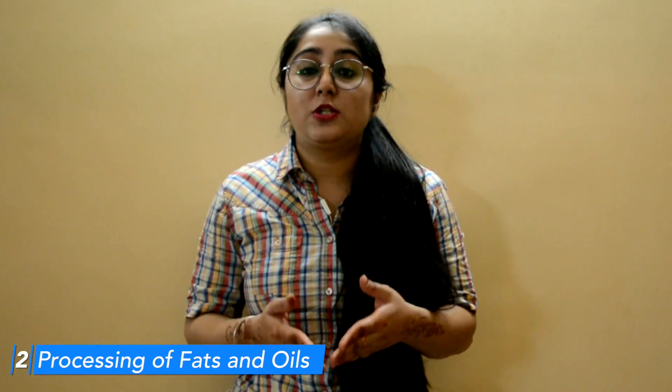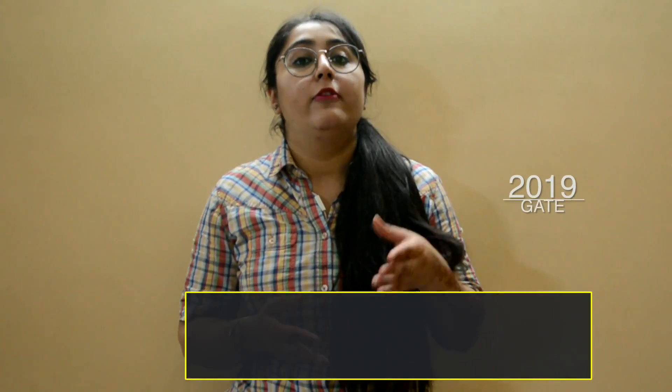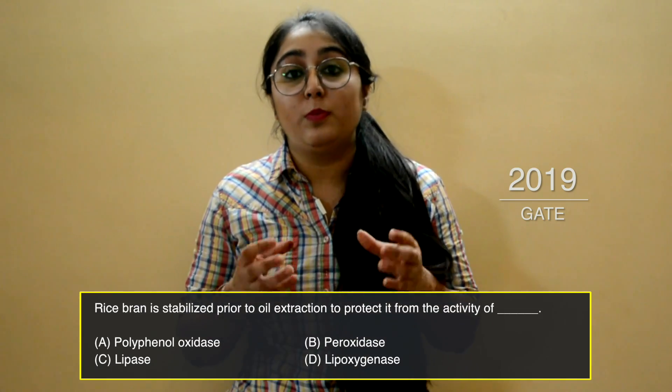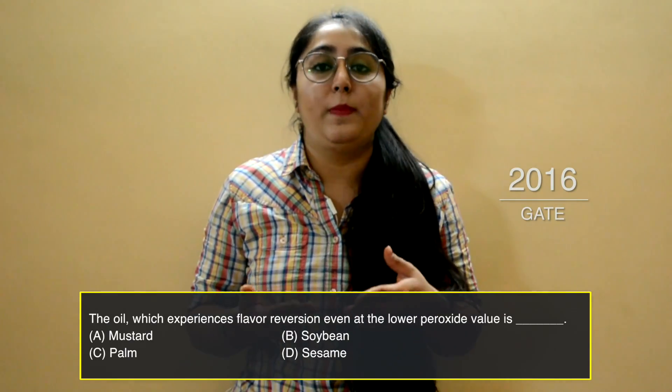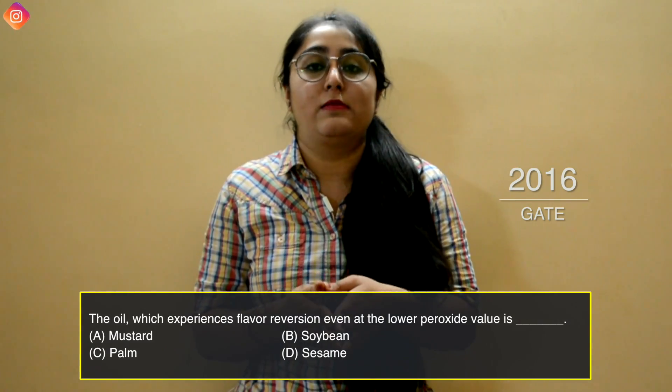Concept number two is about processing of fats and oils. In GATE 2019, a question was asked: rice bran stabilization is important to prevent the activity of which enzyme? This question relates to both concept one (enzyme) and concept two (fats and oils). In GATE 2015, a question on oils asked which oil undergoes flavor reversion even at a lower peroxide value — the correct answer was soybean.